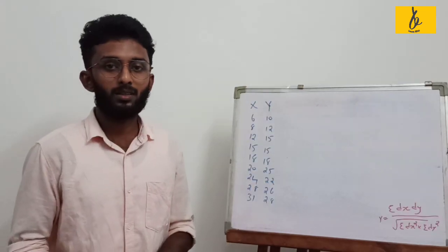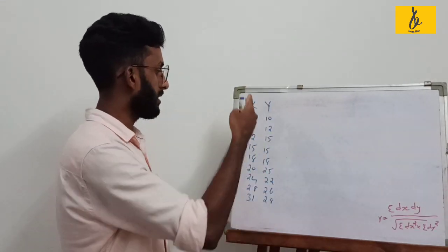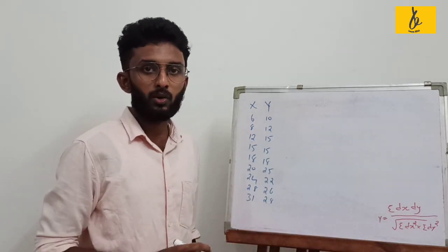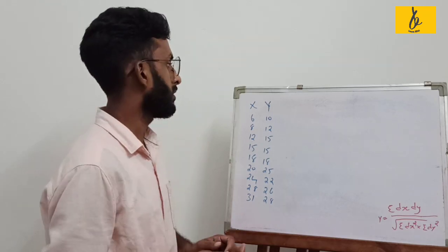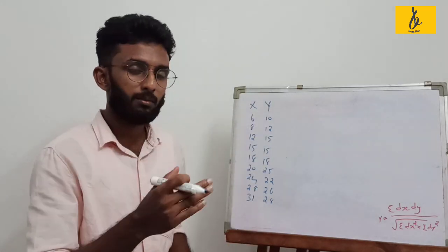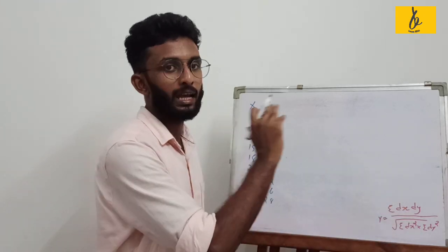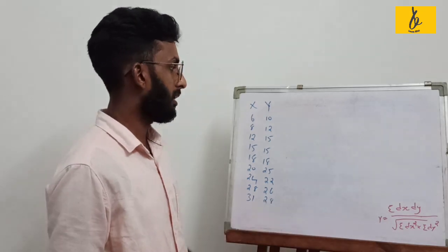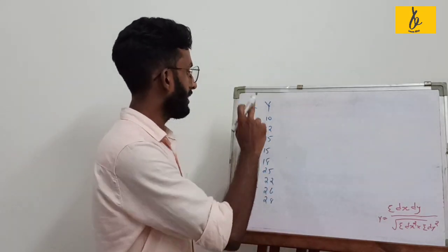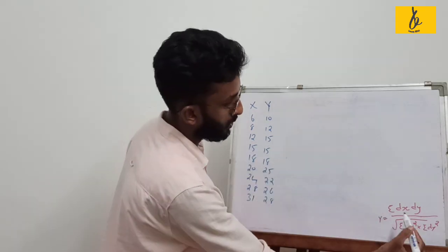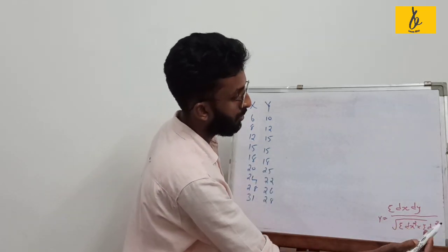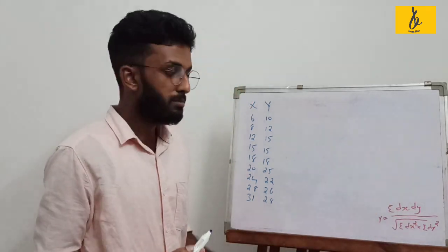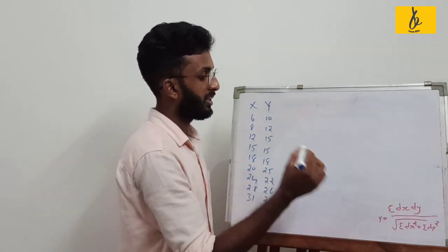We have done the solution. We have to solve this math question. First, we have to create a table. The table will have columns: x, y, dx, dy, dx squared, dy squared, and dx·dy.